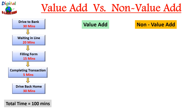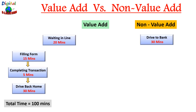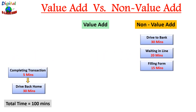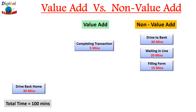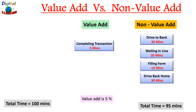Now let's bifurcate this into value-added and non-value-added activities. Driving to the bank is a non-value-added activity; waiting in a queue is non-value-added; filling up forms is also non-value-added. But completing the cash transaction is value-added, because you are getting cash in hand. Driving back home is again non-value-added. If you sum the non-value-added time, you get 95 minutes out of 100 total minutes — meaning only 5 minutes, approximately 5%, is value-added, and the rest 95% is non-value-added.